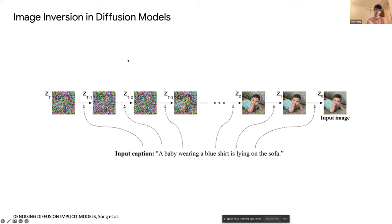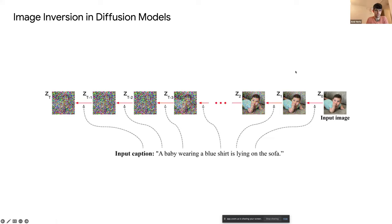To understand how we can edit real images, we need to look at the generation of the diffusion model again. We start from noise and a caption and get an image. In order to apply Prompt-to-Prompt over a real image, we need to do the reverse — start with an input image and find the trajectory of noise, or find the initial noise that if we start from will regenerate this image given the prompt.